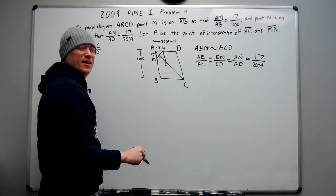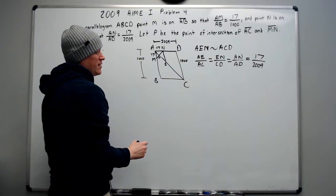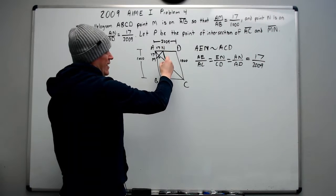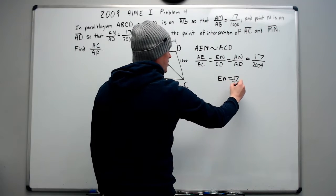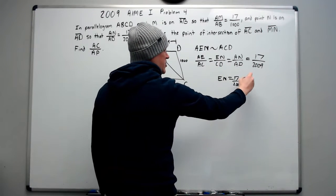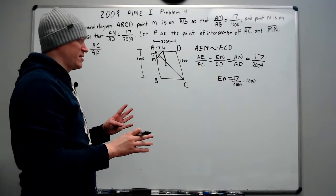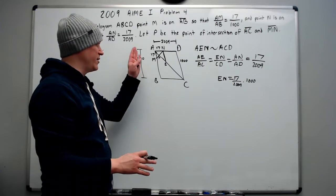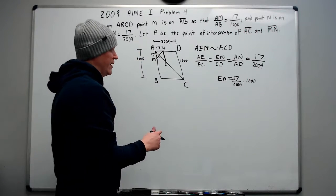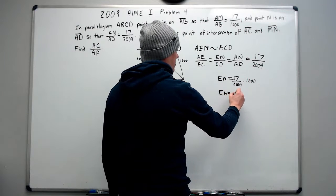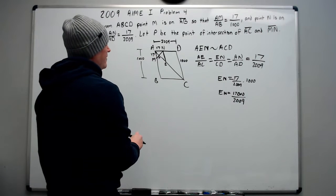What about EN over CD? We can't do much with that yet, but AN over AD, we know what that is. That's 17 over 2009. So now we get that all three of these are equal to 17 over 2009. And in fact, because it's a parallelogram, we know that AB and CD are equal. They're both 1000, which means that I can express EN as equal to 17 over 2009 times CD, which is 1000 in our problem.